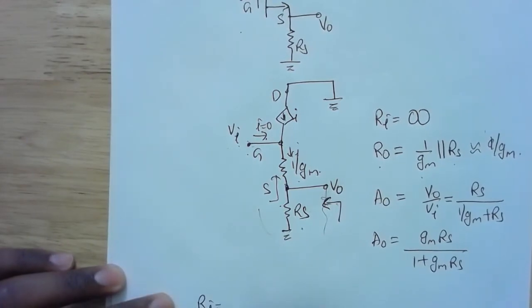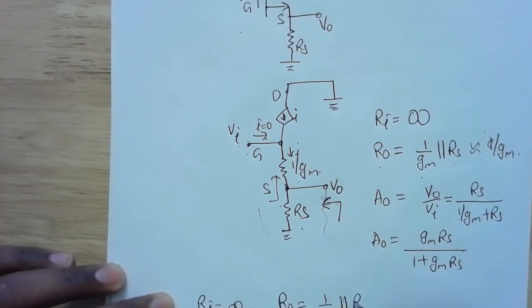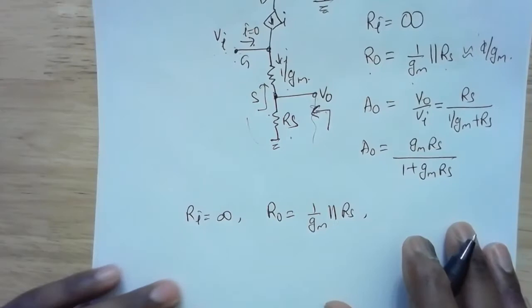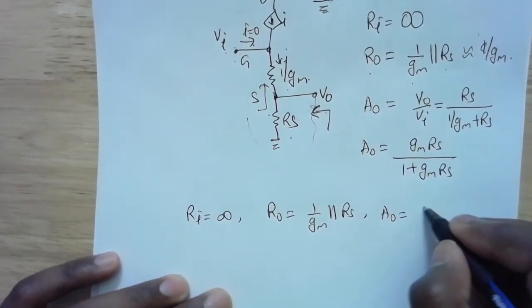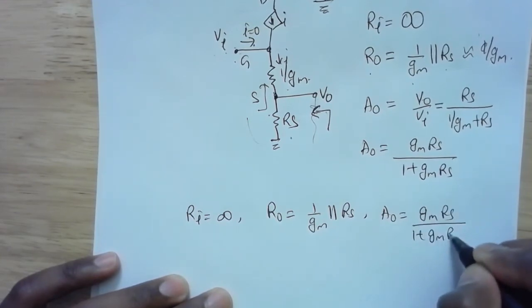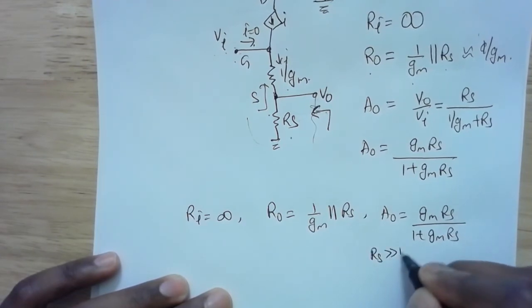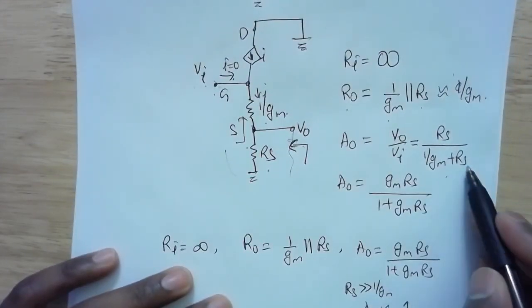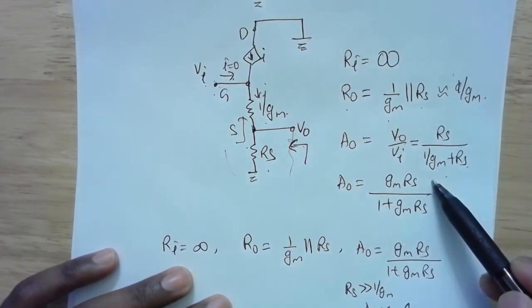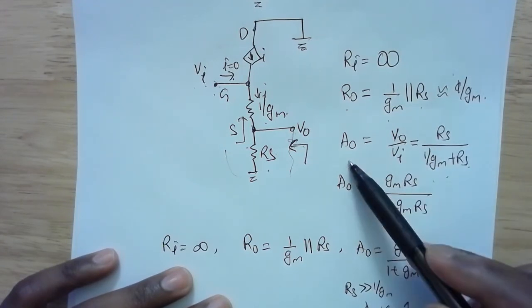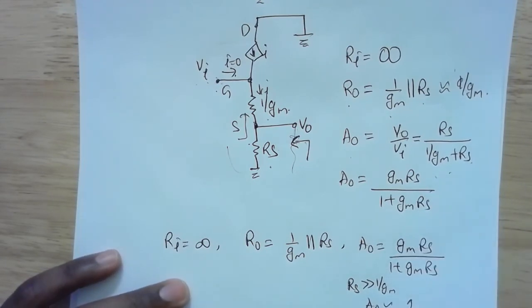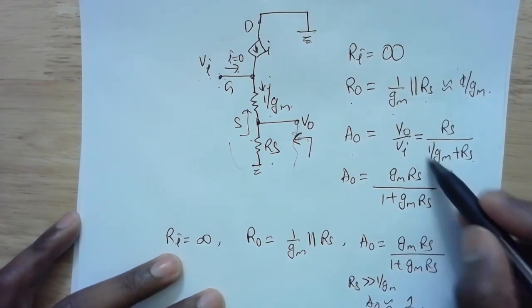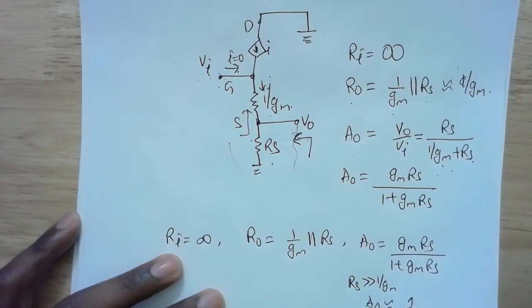To summarize: input impedance RI is infinite, output impedance RO is 1/gm parallel with RS, and open circuit voltage gain AO is gm·RS divided by (1 + gm·RS). If RS is much greater than 1/gm, the denominator is approximately RS and AO is approximately equal to 1. Otherwise it will be slightly less than 1, but when 1/gm is very small relative to RS, AO approaches 1.